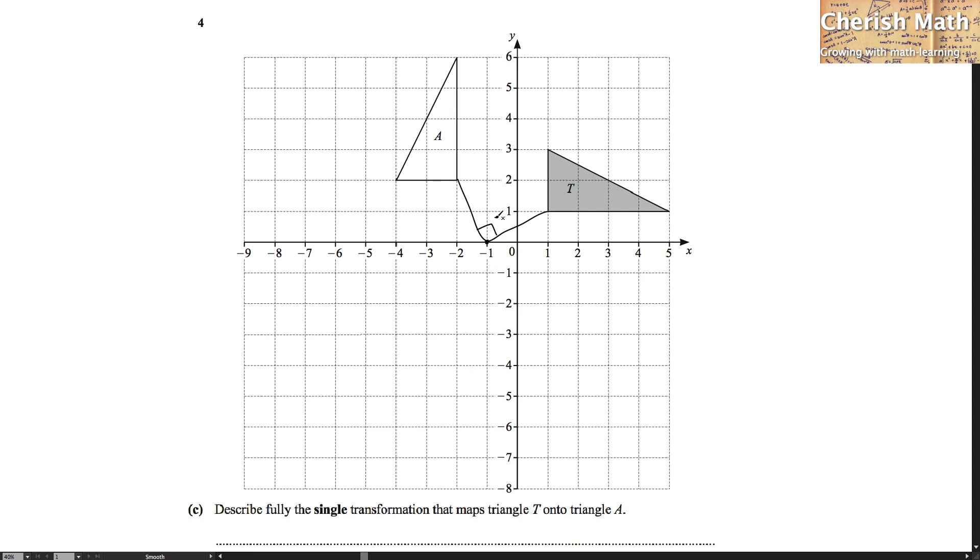By looking at the diagram, the transformation from triangle T to triangle A, we can be pretty sure it is by means of 90 degrees anticlockwise. And now, we have to conclude that.